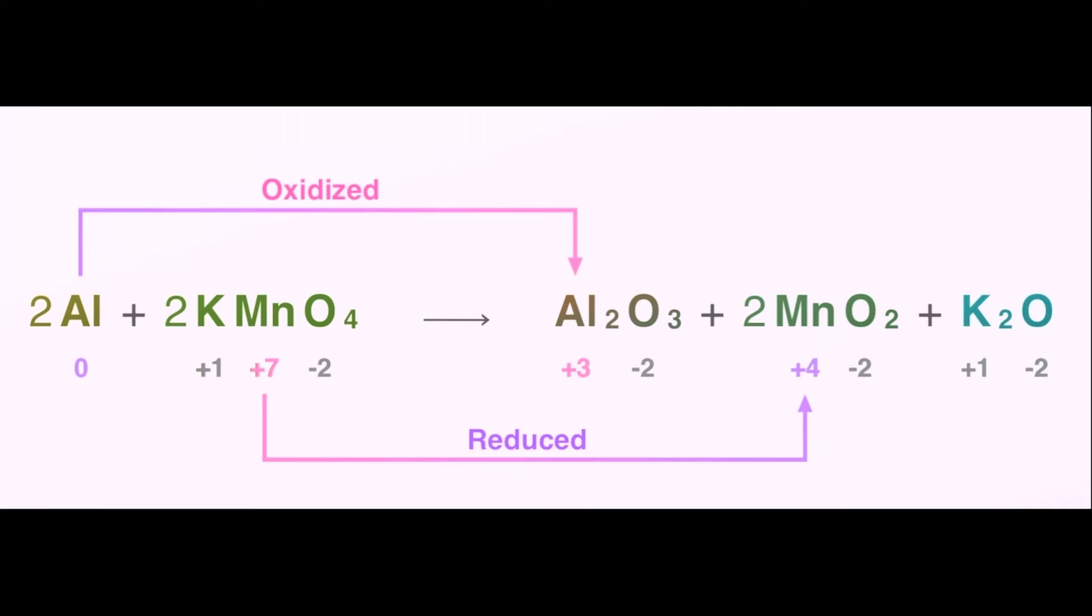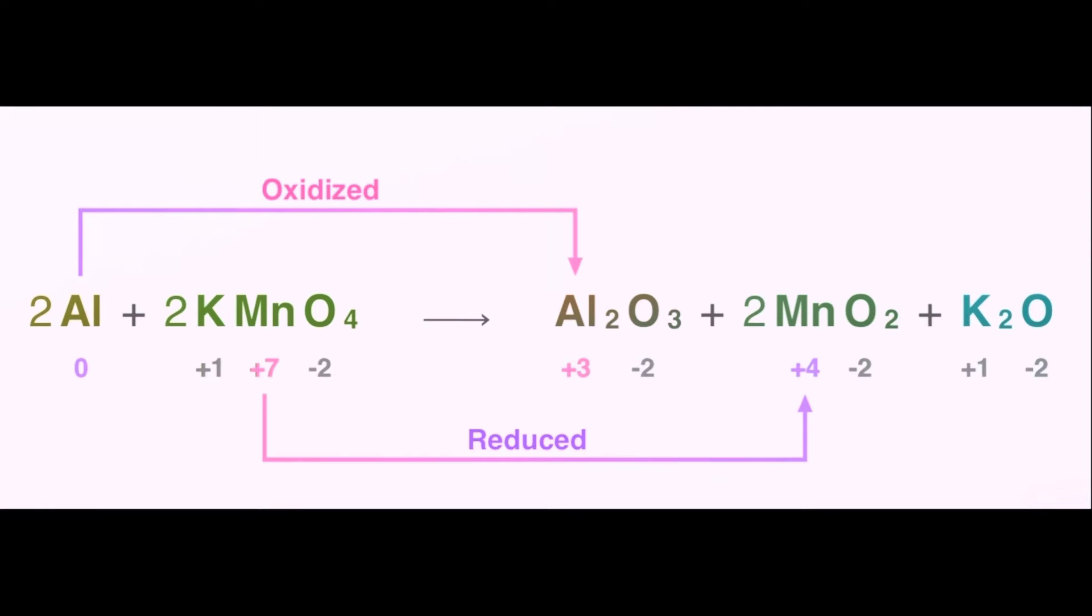Now this is also an oxidation-reduction reaction. As aluminum is being oxidized, it's losing three electrons. It changes from an oxidation state of zero to plus three.